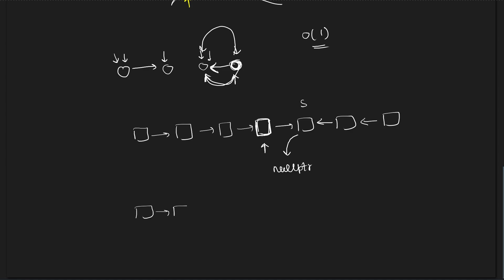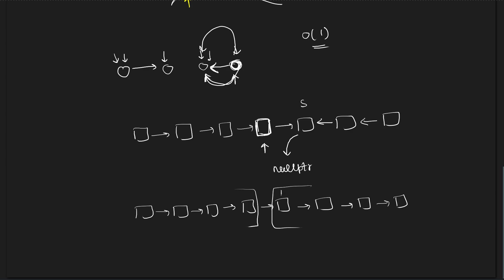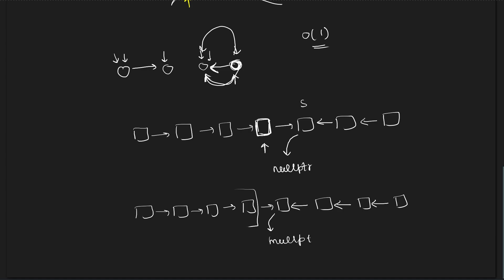The case for even n works the same way — we identify the first node of the second half, reverse the edges from there, and mark the last as null. In both odd and even cases, we take the first node of the second half and reverse the linked list starting from there.